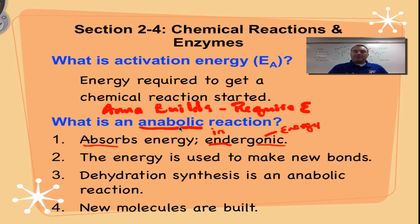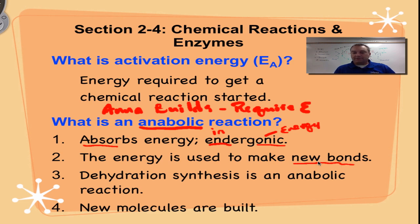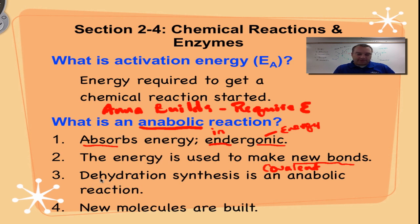Endergonic means energy is being absorbed and brought in. This energy is used to build new chemical bonds, which are almost always covalent. Covalent means you're sharing electrons on the outside of the atom.